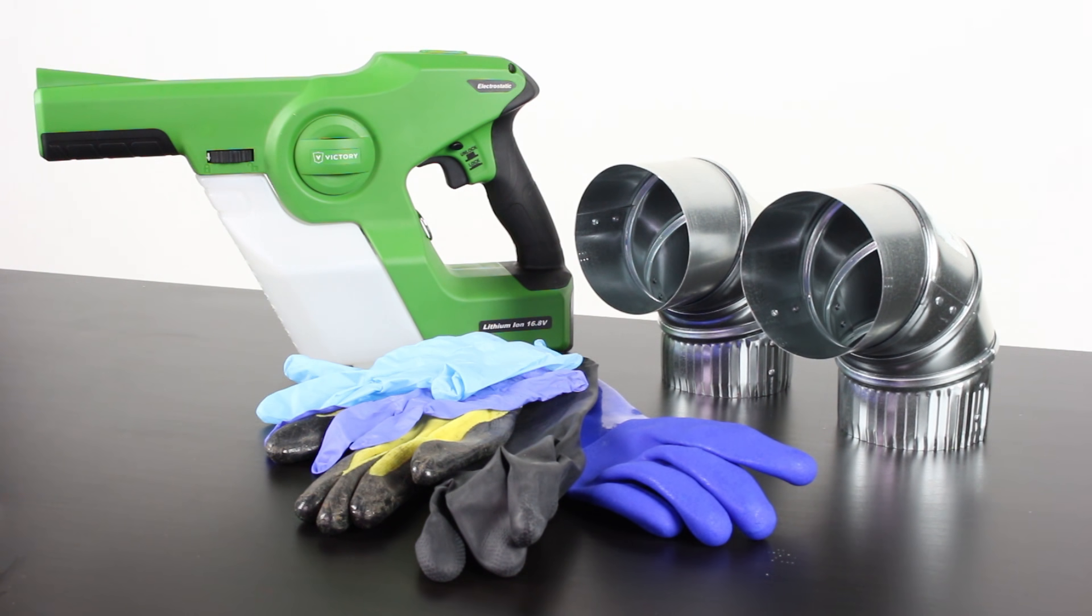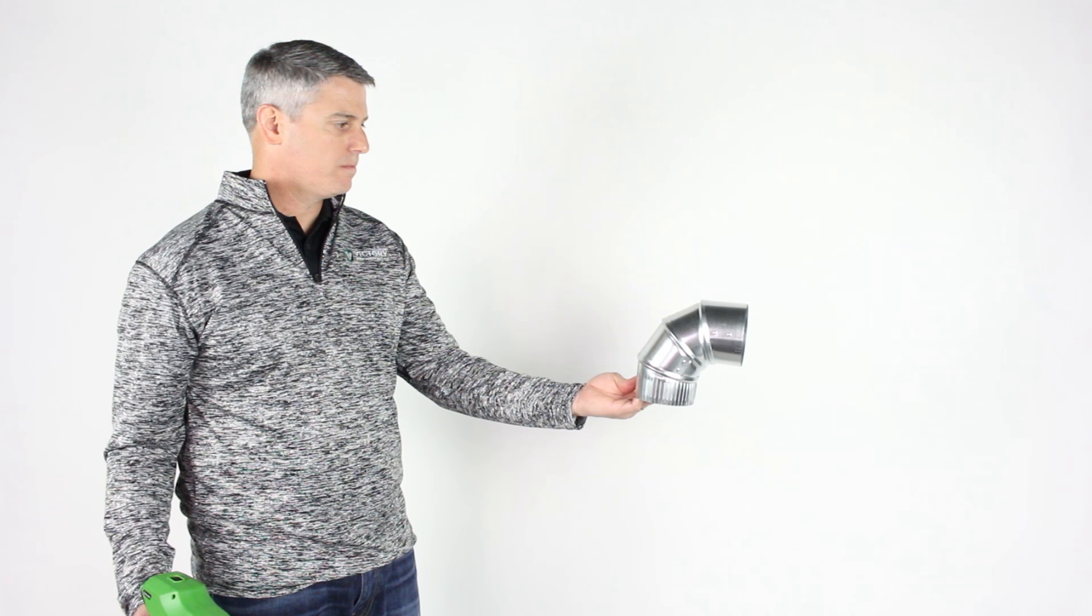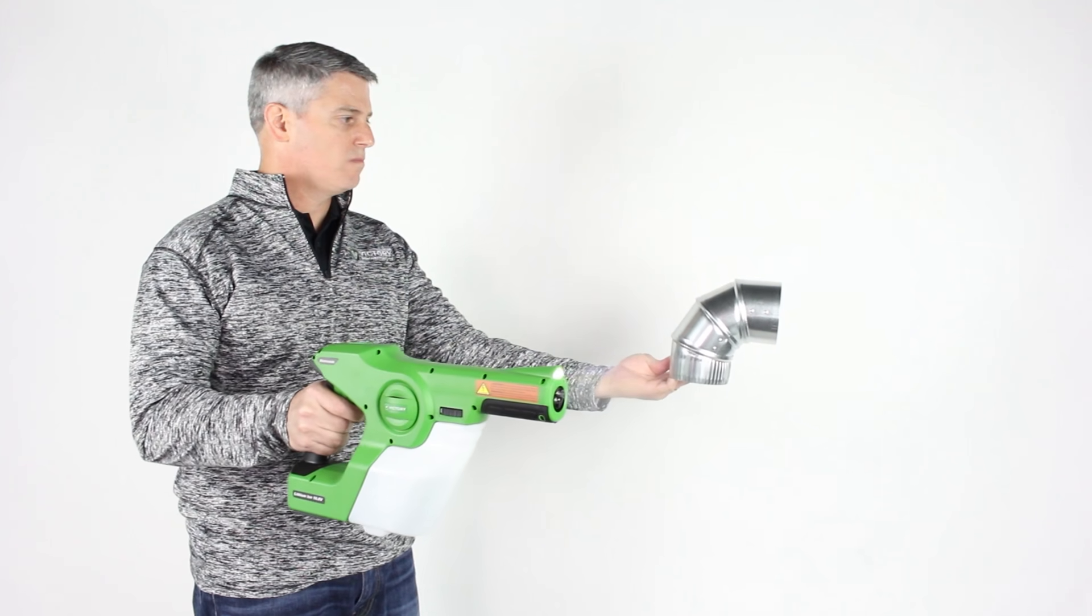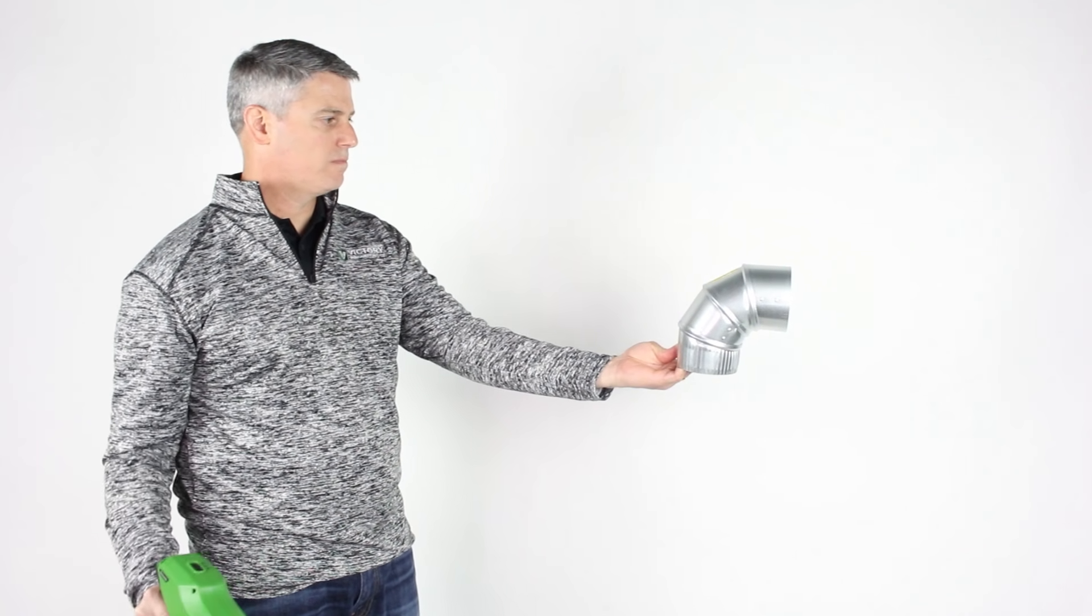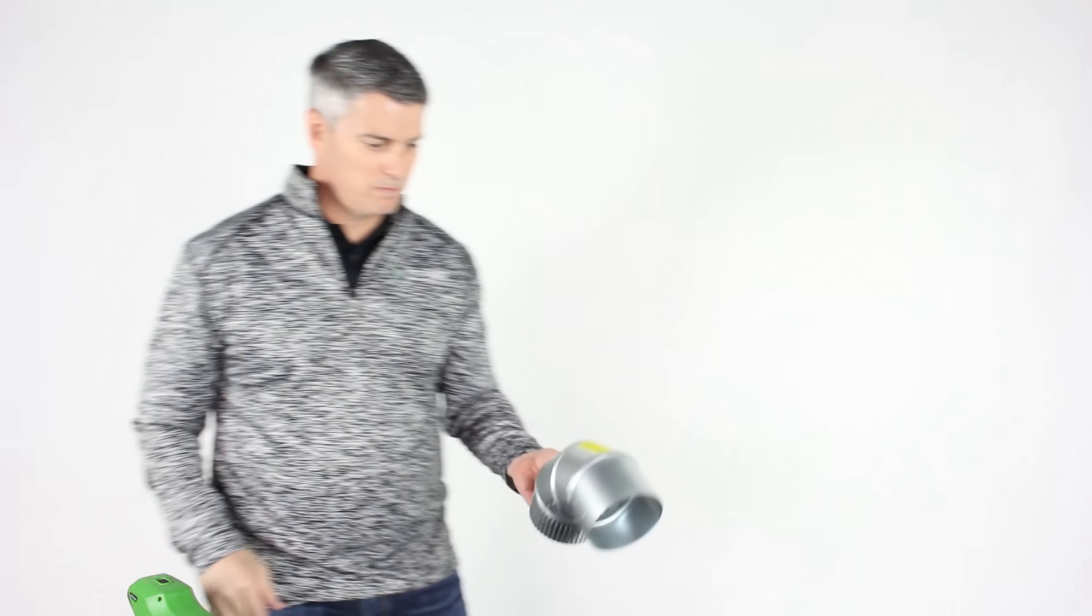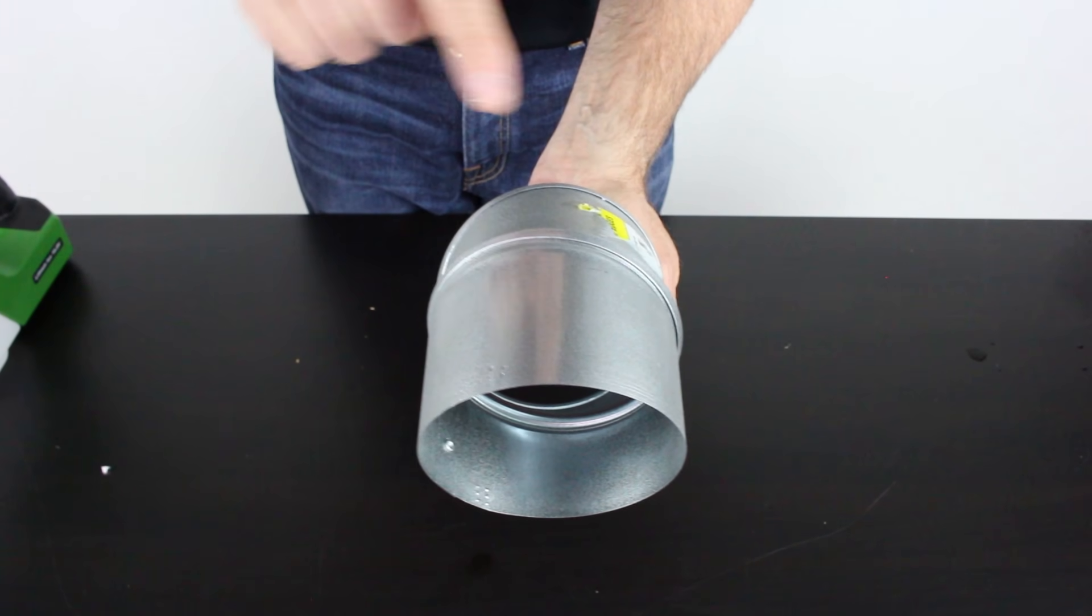In this first demo you'll see that I'm using an HVAC vent pipe that you could find at any home improvement store. As I spray the electrostatic sprayer across the top of the vent pipe, the first thing you'll see is a really nice even coating of spray applied to the top of the vent pipe.